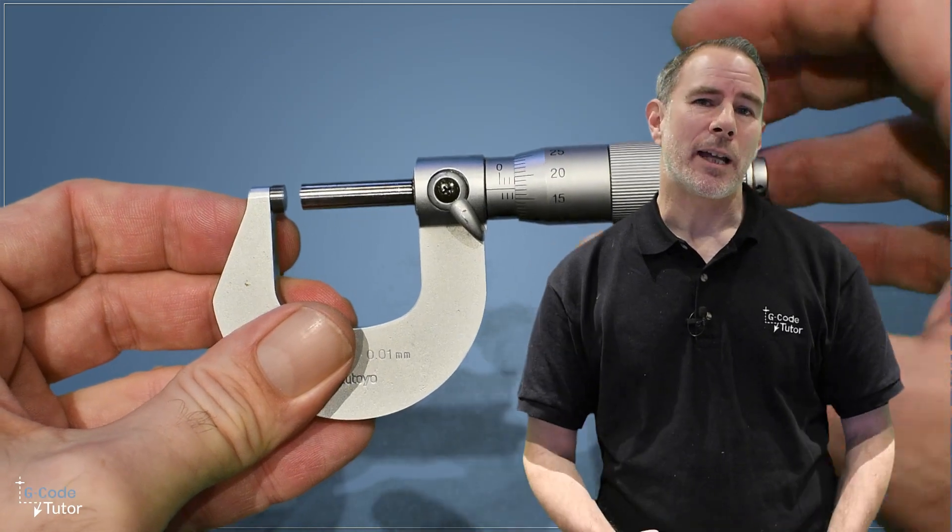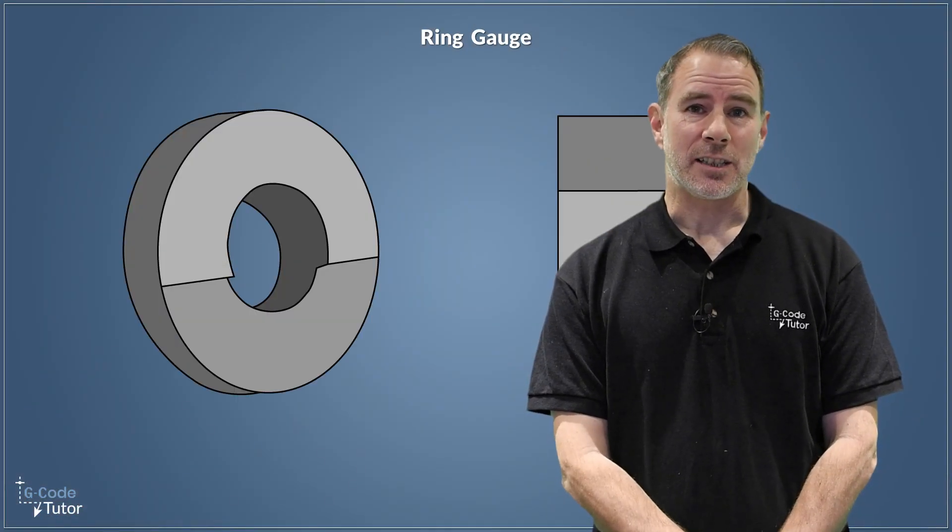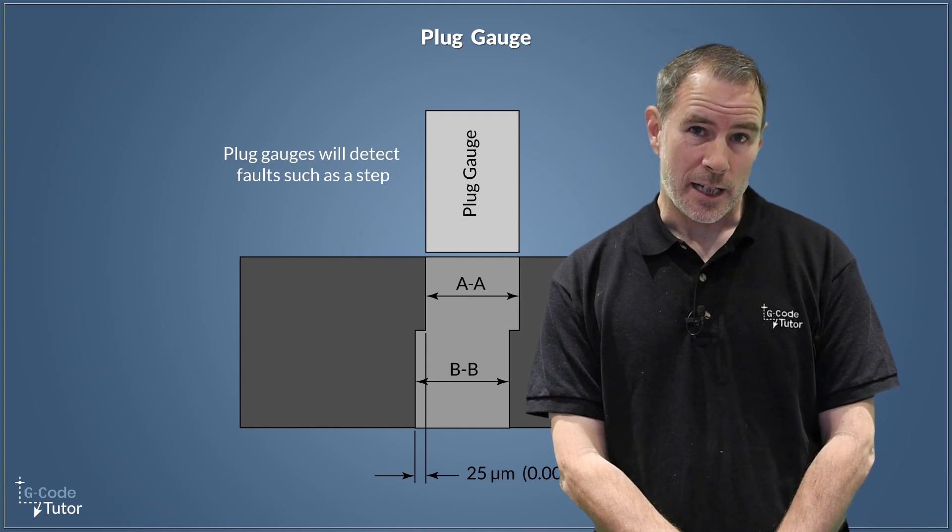So not only do we look at micrometers and verniers and the scales used on those tools, we also look into plug gauges, ring gauges, and the different kinds of gauges that we would use in the machine shop.